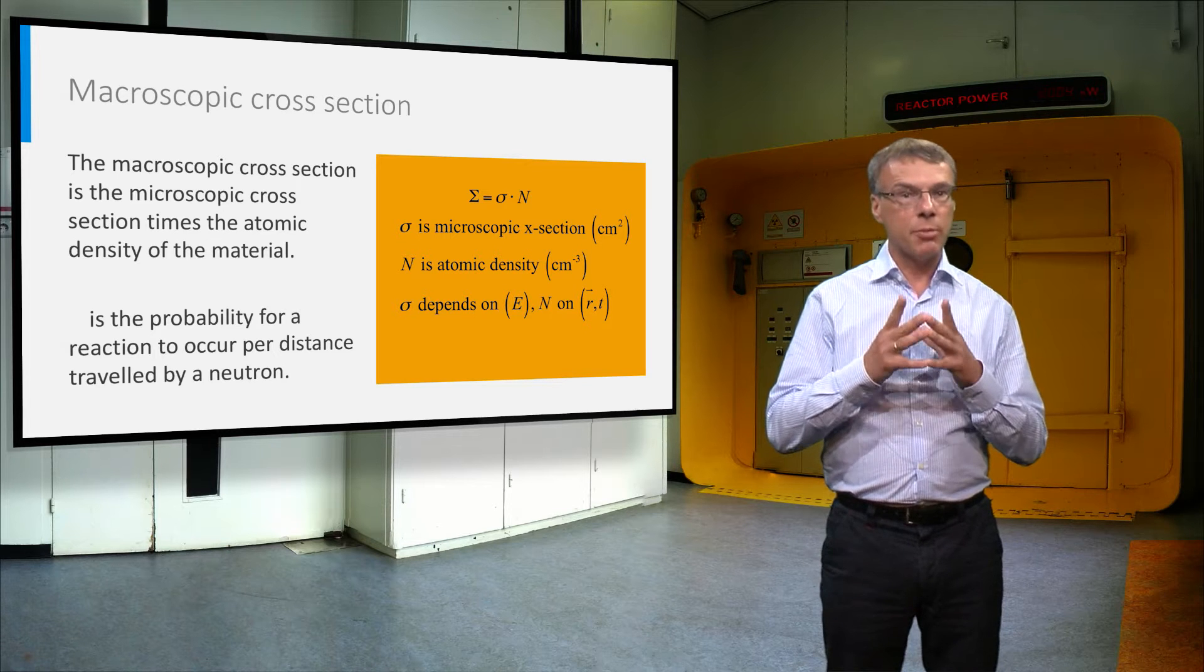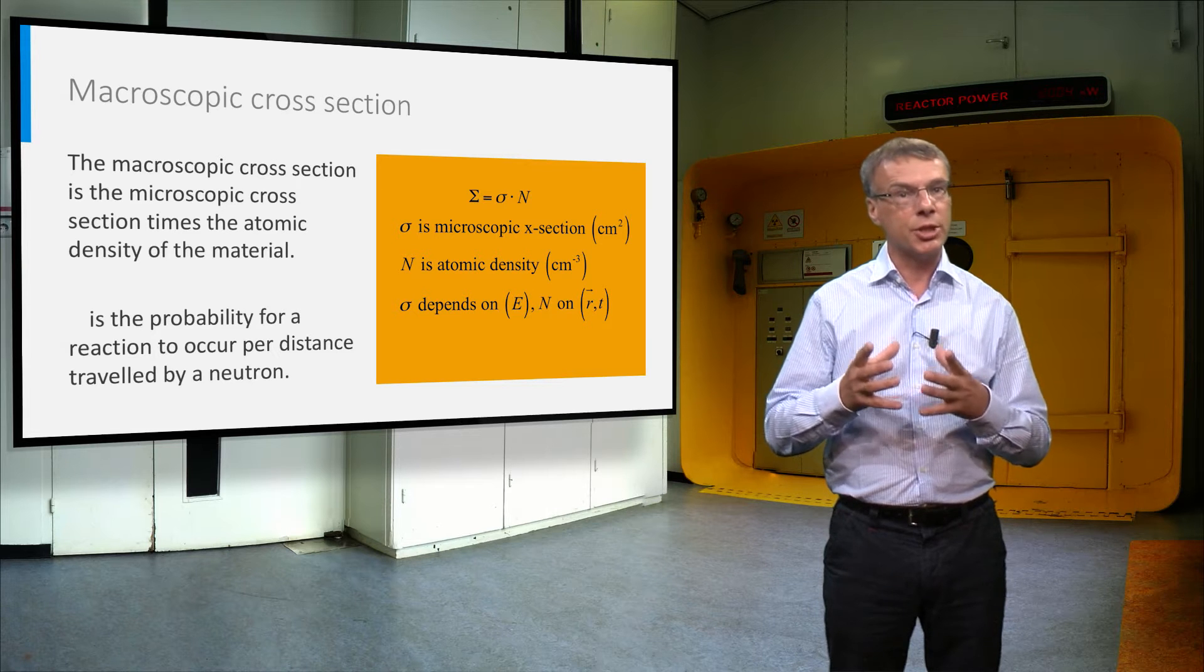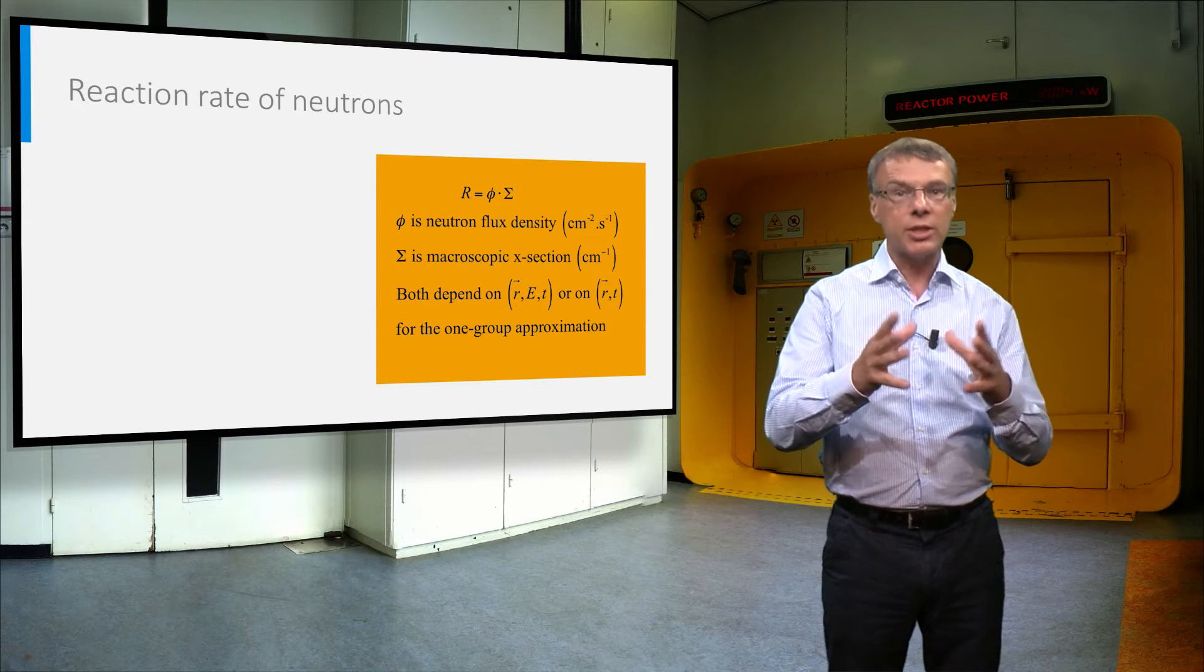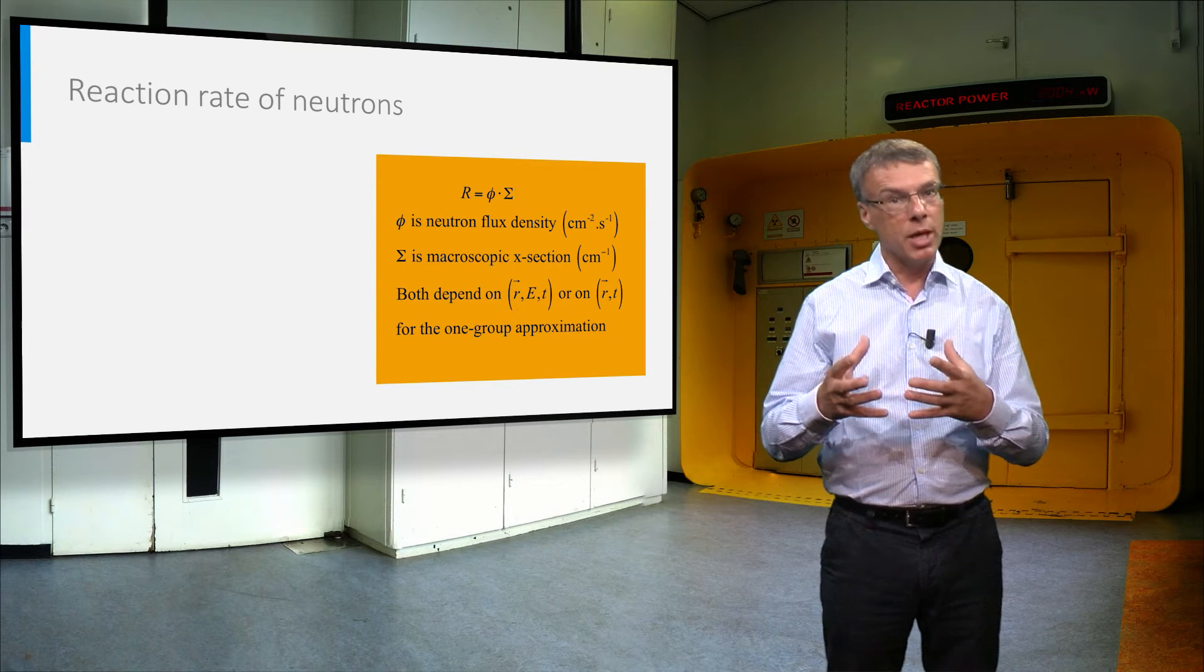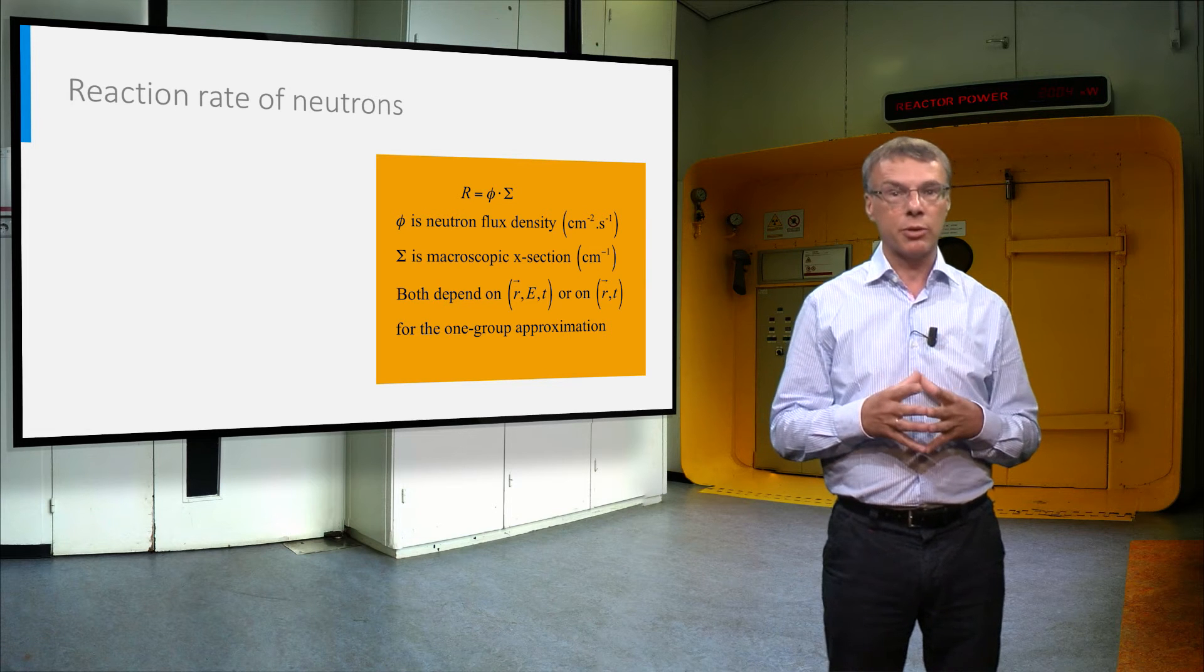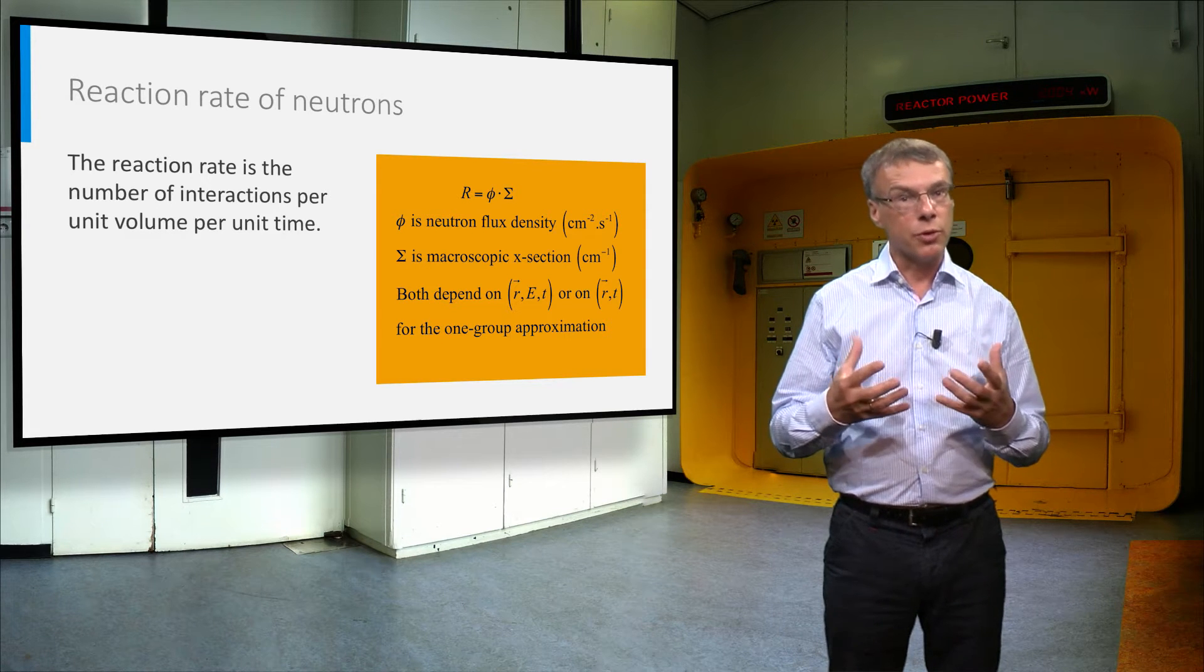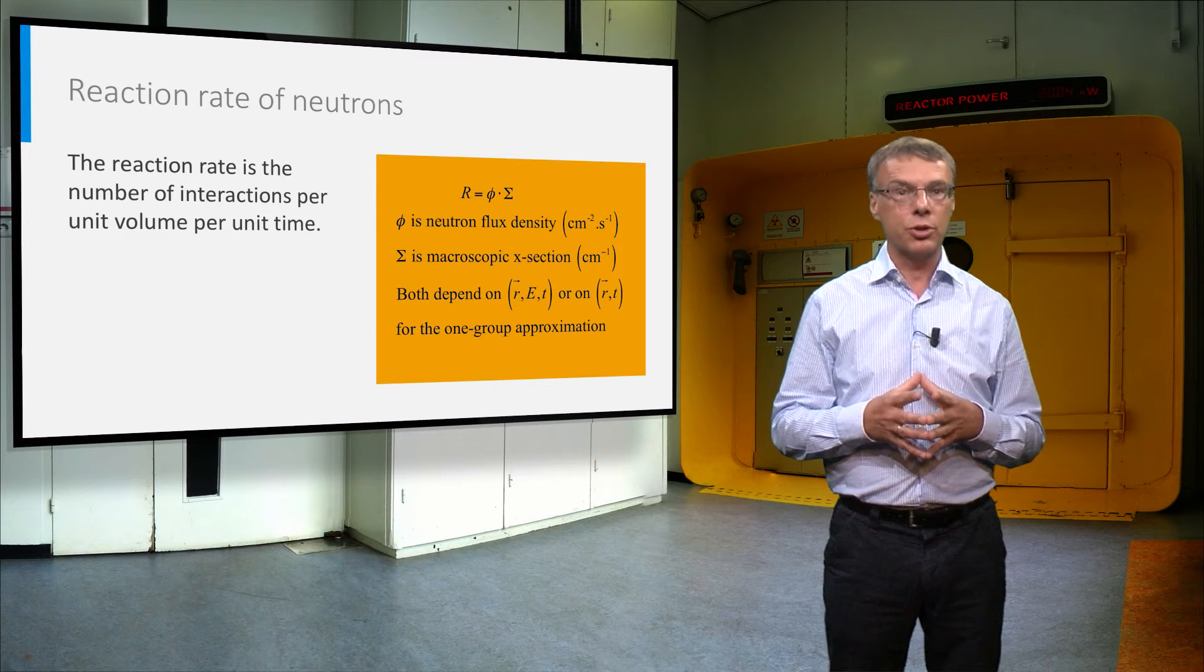The product of these two factors is called the macroscopic cross section of the material. And we will use this macroscopic cross section to calculate the reaction rate density in the material. On the previous slides we have seen that the neutron flux density is a total distance traveled by all neutrons per unit volume and per unit time, and that the macroscopic cross section is the interaction rate per unit distance traveled by the neutrons. This means that the product of these two factors gives the total number of reactions per unit volume per second, and this parameter is called the reaction rate density of the neutrons.